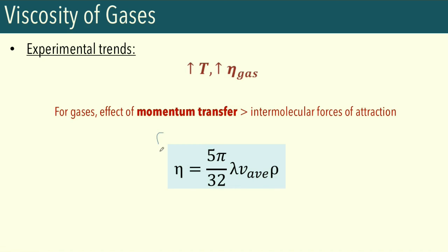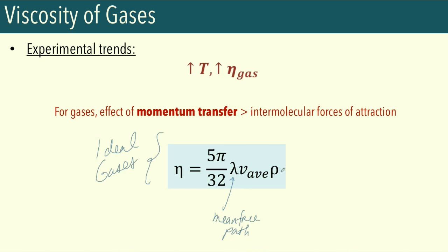For ideal gases, the viscosity coefficient is related to (5π/32) times lambda (the mean free path) times the average velocity times the density of the gas.